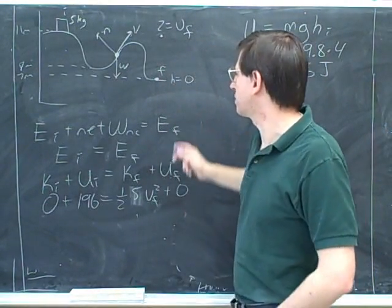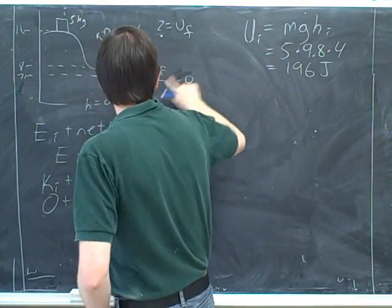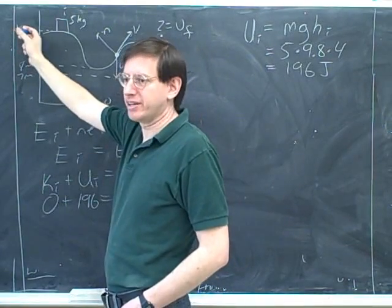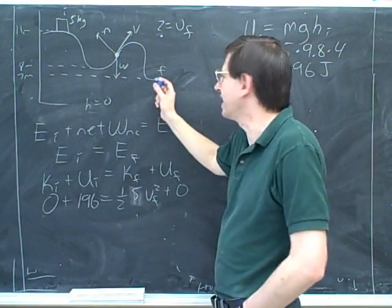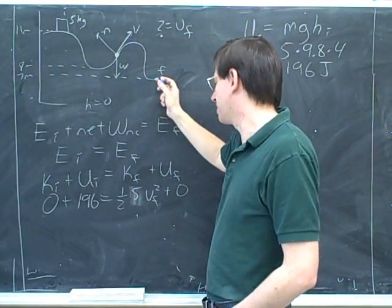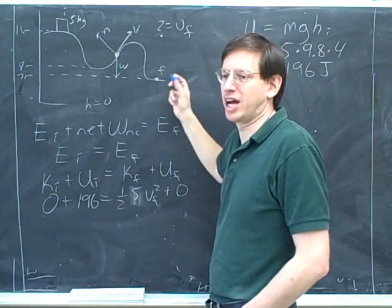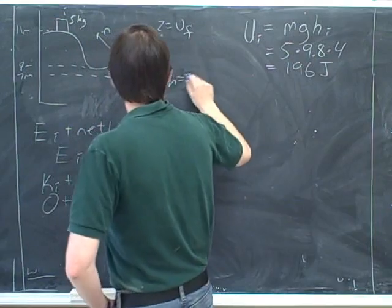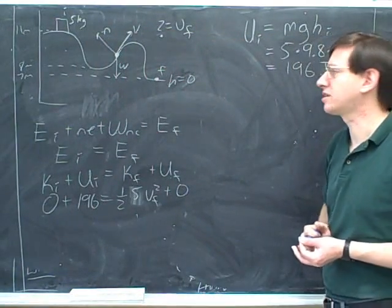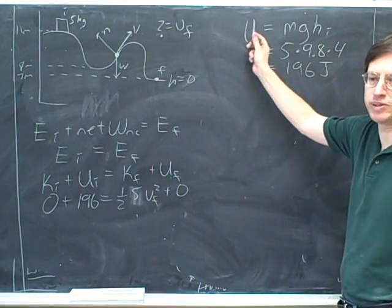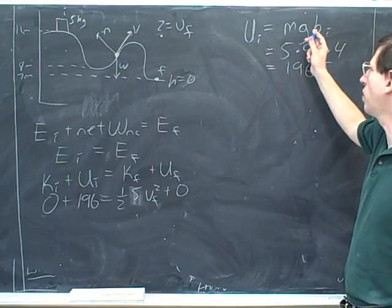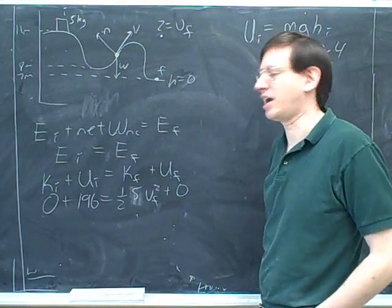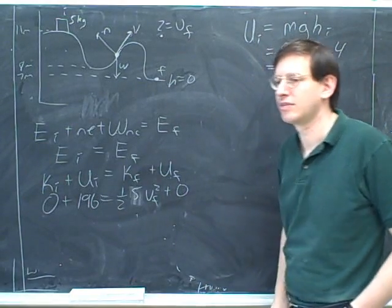Now you didn't have to make this the ground. If you wanted to, you could have called this the ground. And then for U initial, you would plug in a height of 11. And for U final, you would plug in a height of 7. And that would end up giving you pretty much the same thing, but it's a little bit more complicated. So it was a good clever trick to treat this as the height of zero instead. So that's an important thing to know about gravitational potential energy. You can pick whatever you want to be the height of zero. And you should label that in your picture so that you're consistent with that from that point on.